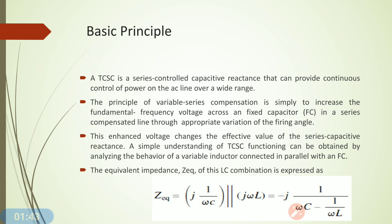A TCSC is a series controlled capacitive reactance that can provide continuous control of power on the AC line over a wide range. The basic principle of operation of TCSC is variable series compensation, which simply increases the fundamental frequency voltage across the fixed capacitor by controlling the firing angle of the Thyristor Controlled Reactor. This voltage changes the effective value of series capacitive reactance, allowing us to change various parameters of the transmission line.